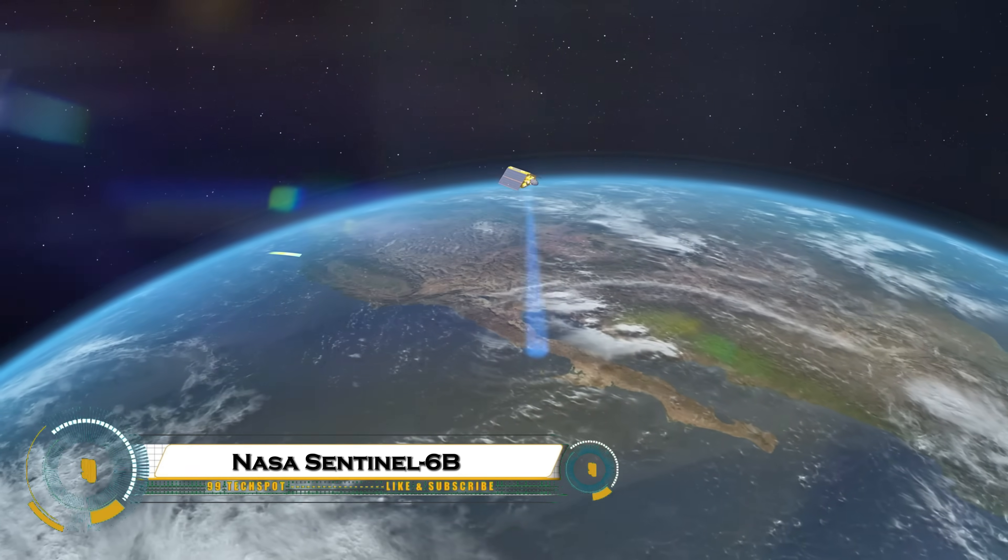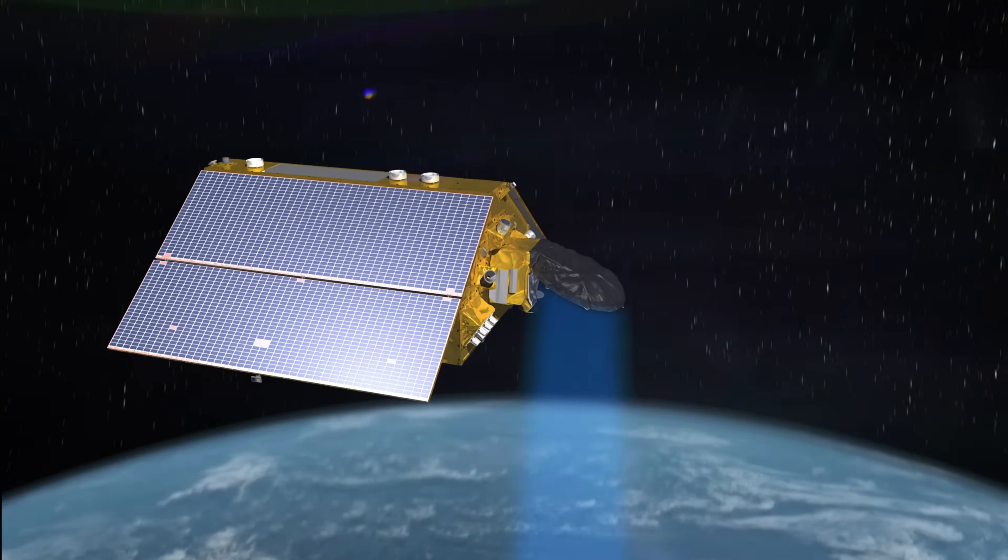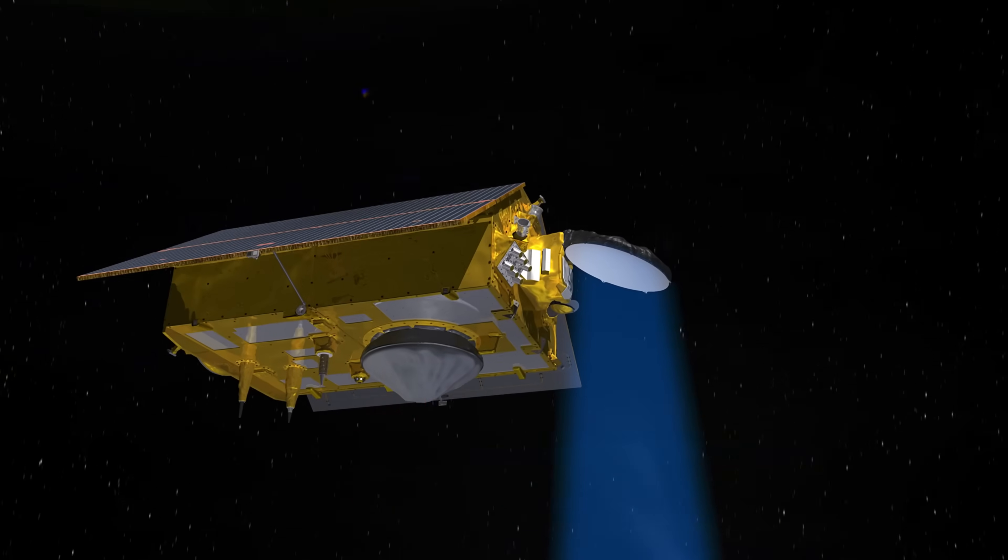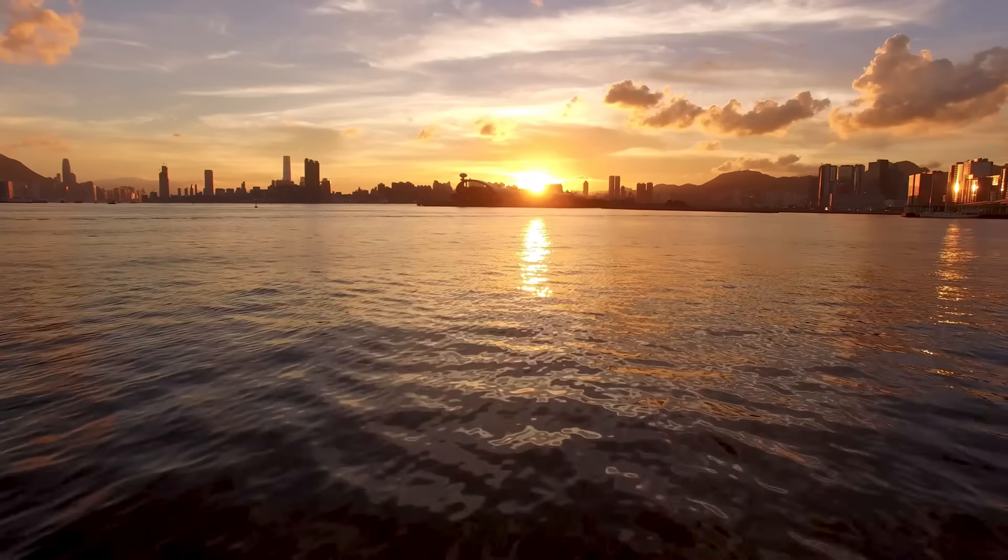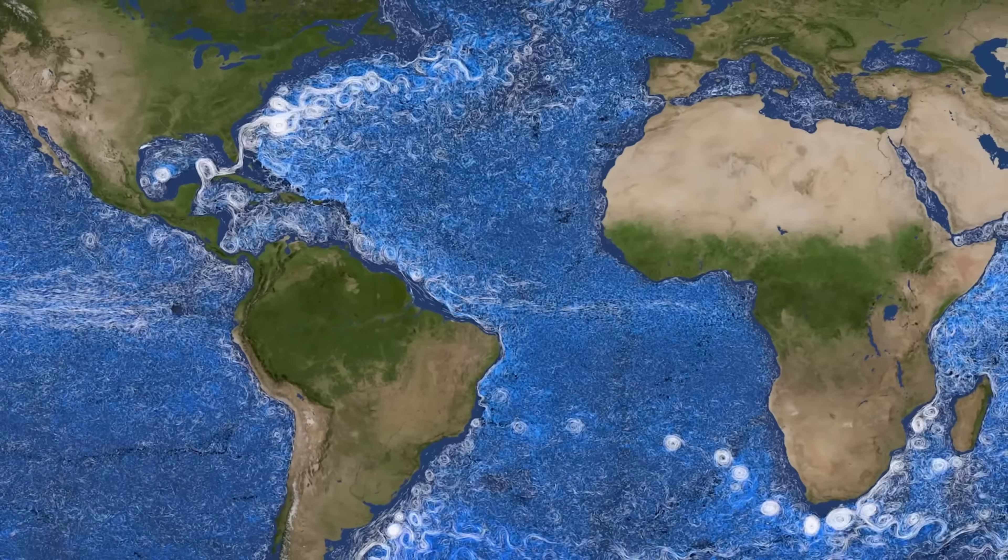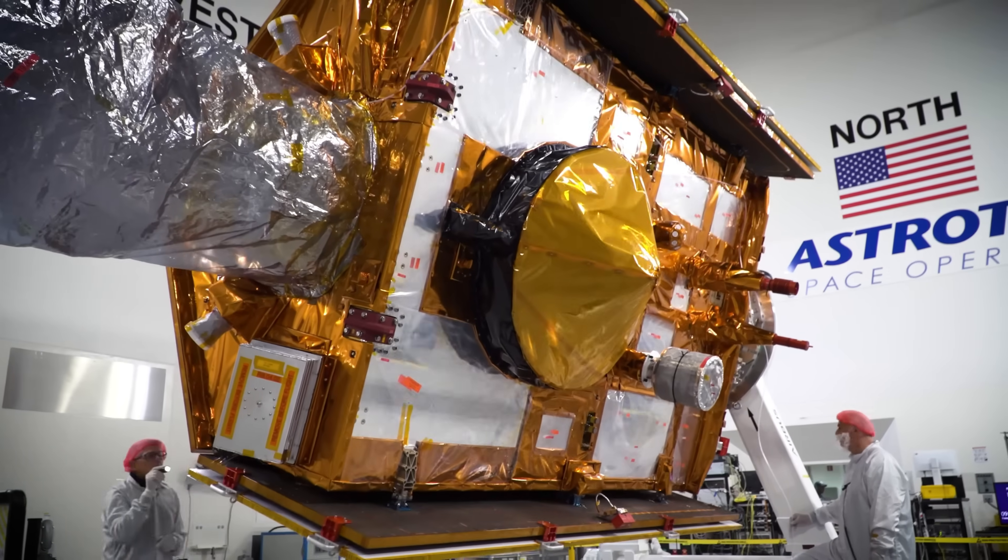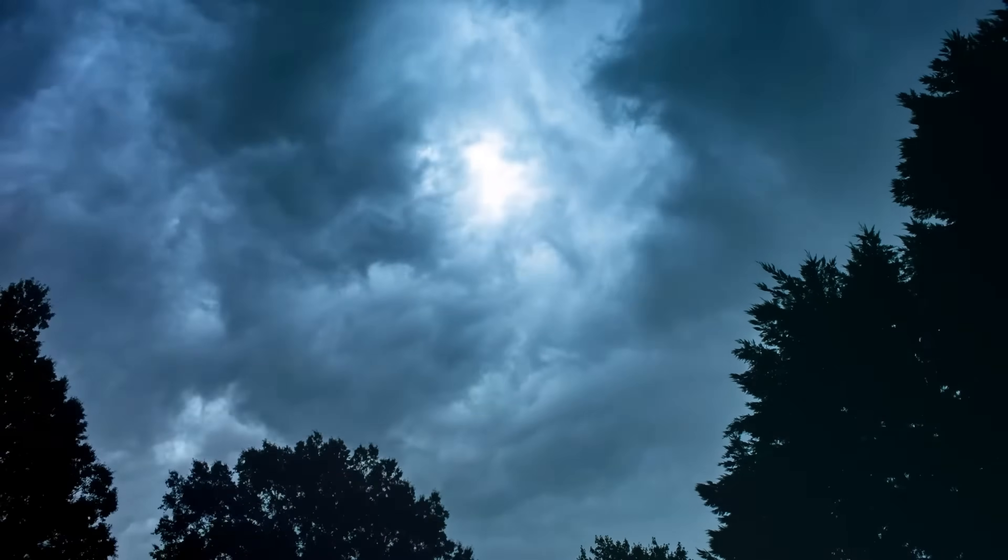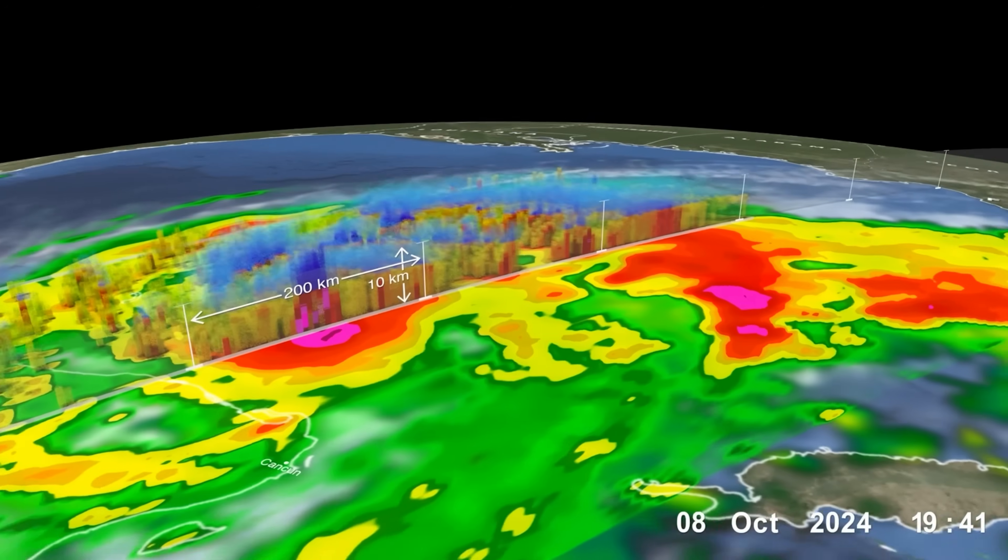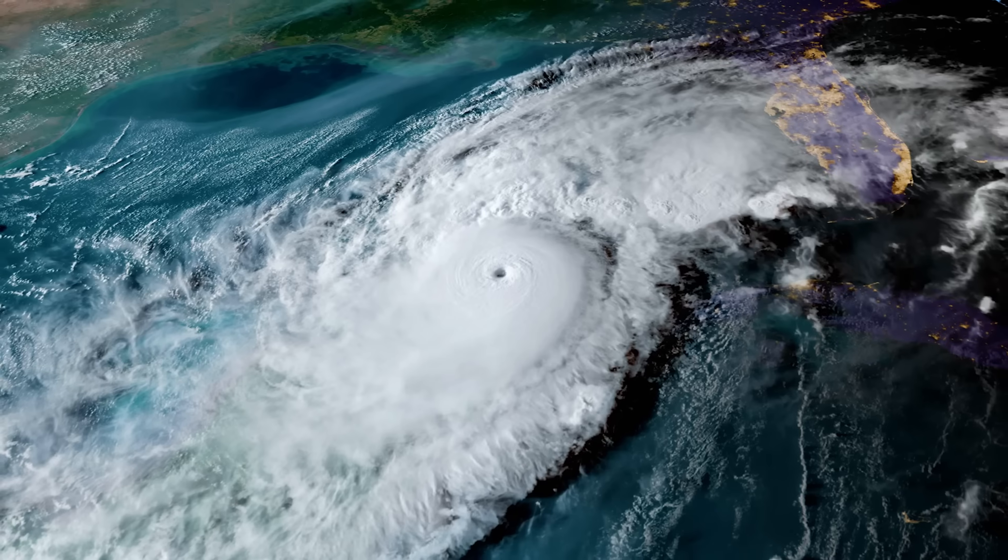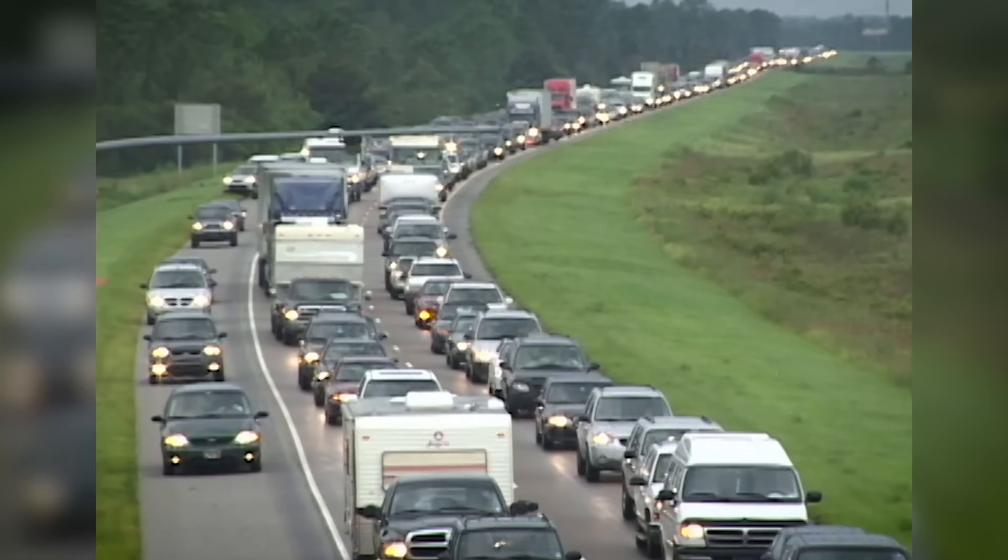Sentinel-6B, launched in November 2025 aboard a SpaceX Falcon 9 rocket, is the latest satellite in a long-lasting international mission to precisely measure global sea levels. Orbiting about 1,336 kilometers above Earth, it uses radar altimetry to track ocean surface height with approximately 1-inch accuracy over 90% of the world's ice-free oceans. This advanced data supports weather forecasting, storm prediction, coastal protection, and maritime navigation.